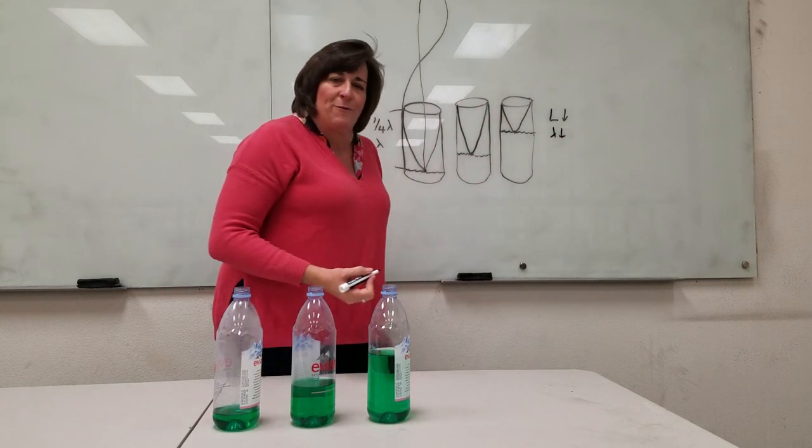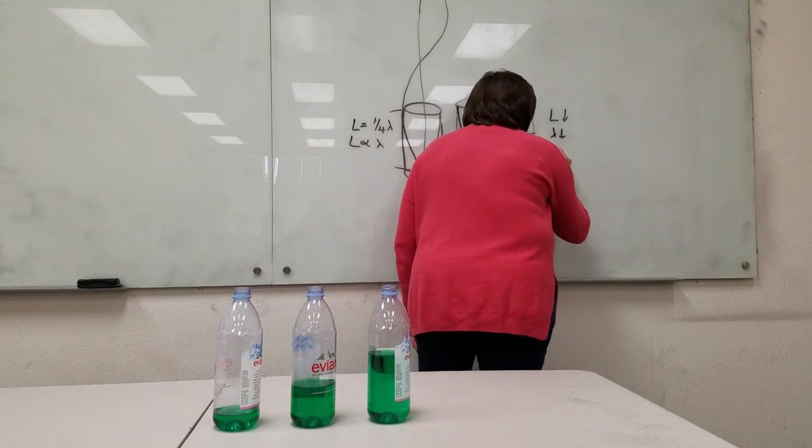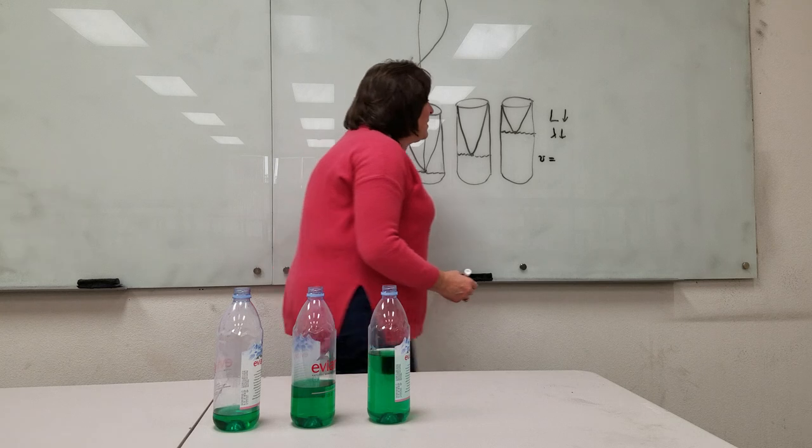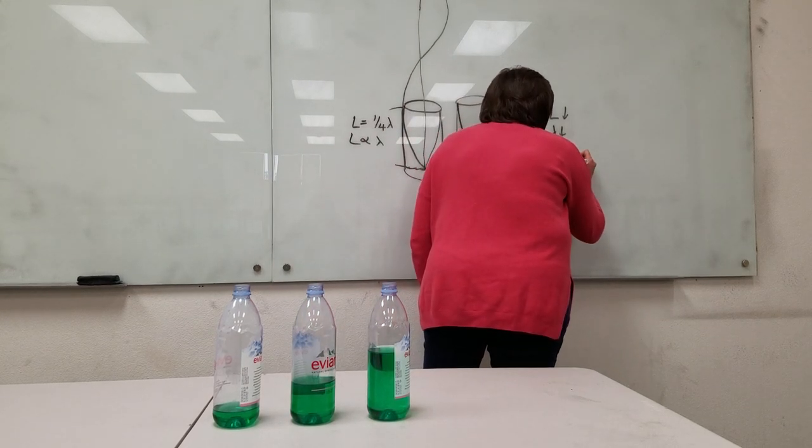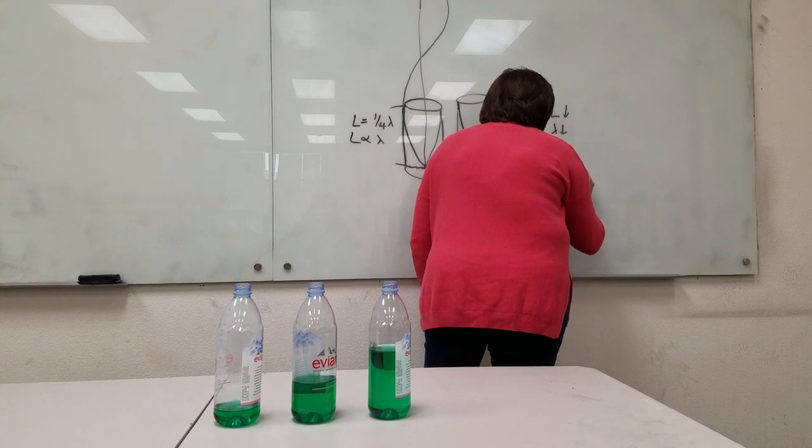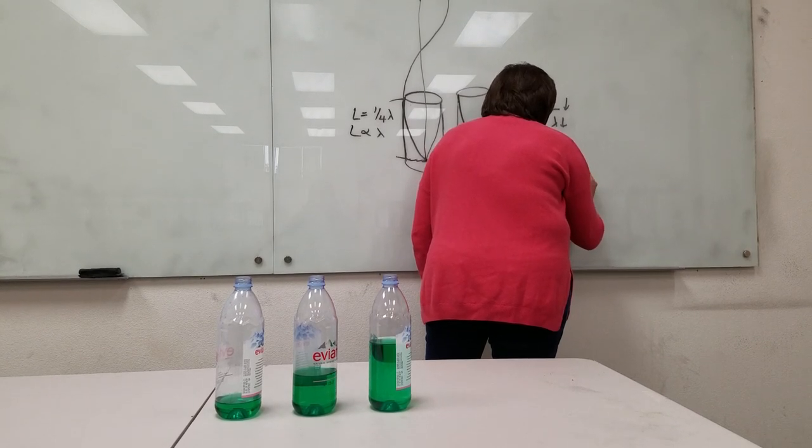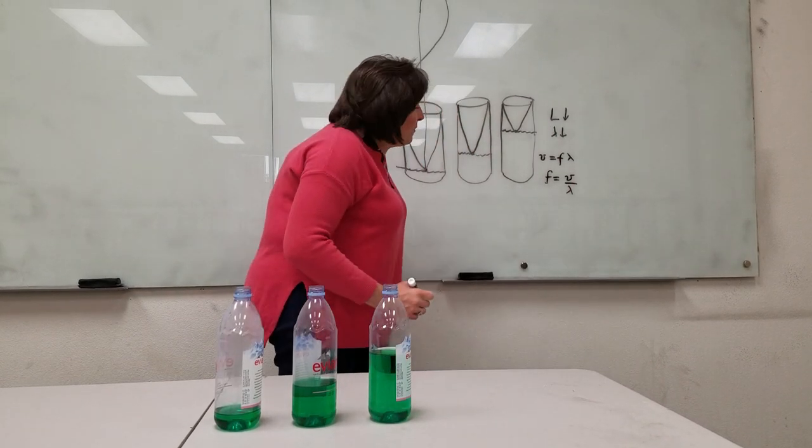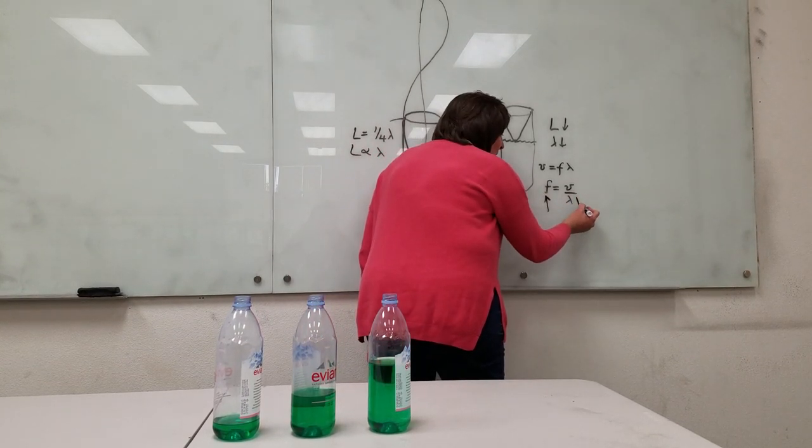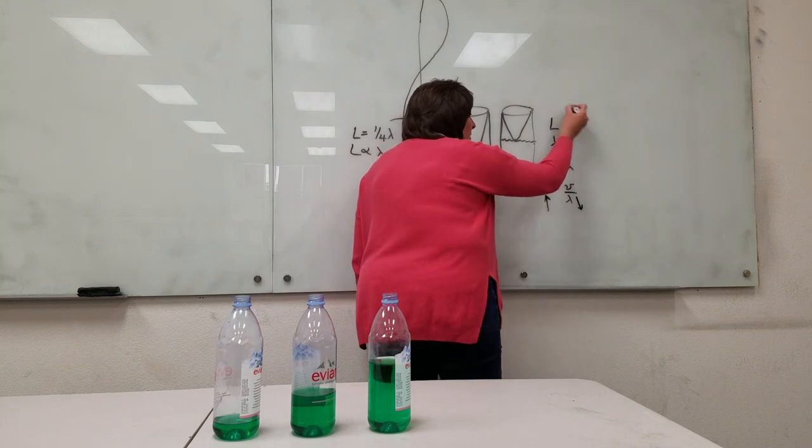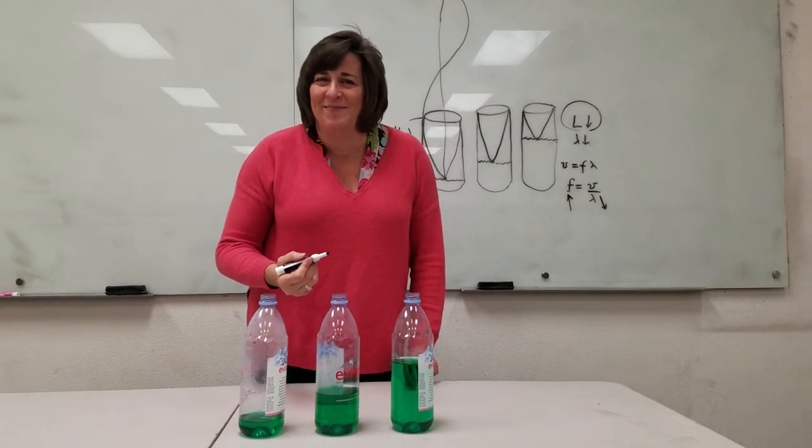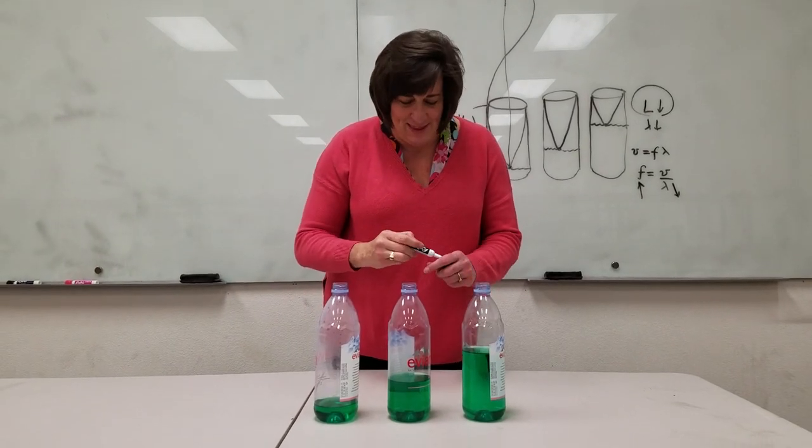Well, we know for waves that the velocity of sound in air for this vibrating column is f times lambda. So if we solve there, f equals v over lambda. So if we want the highest frequency there, we need the lowest value of the wavelength, which is our bottle which is two-thirds full. So give it a try at home.